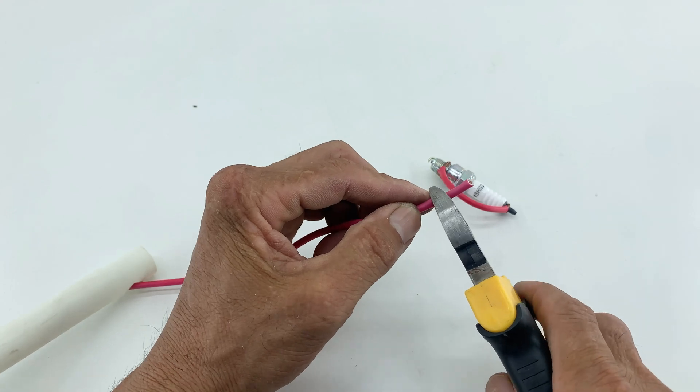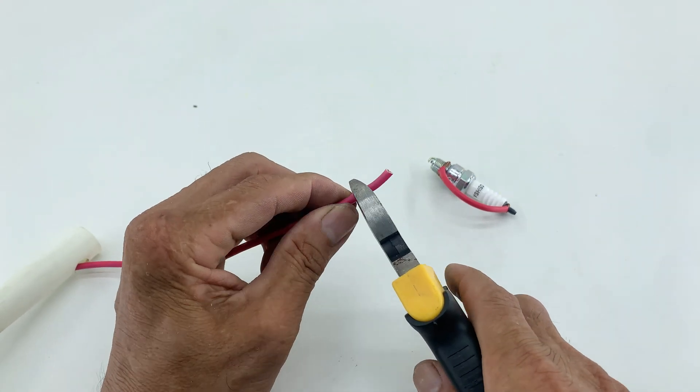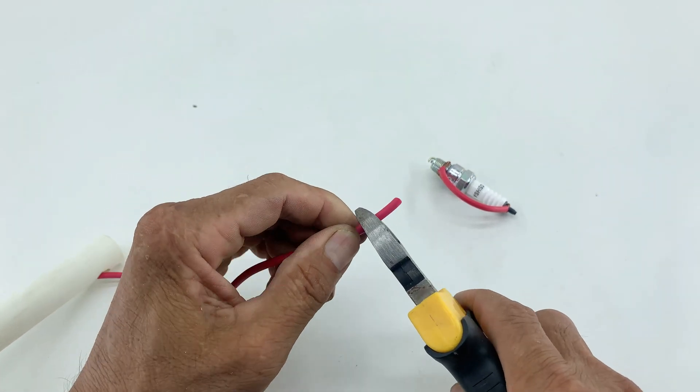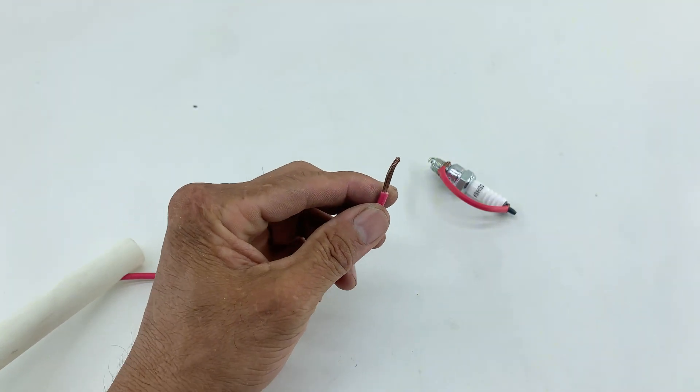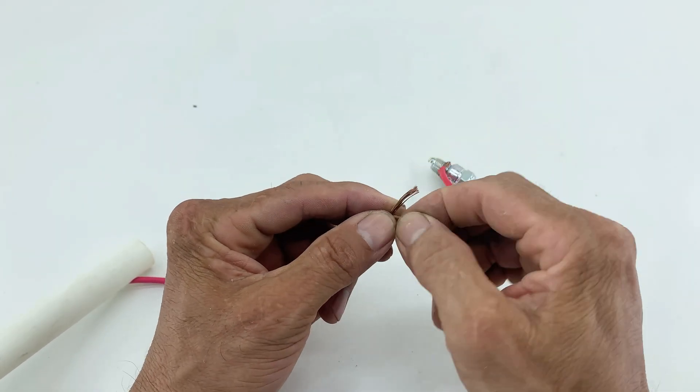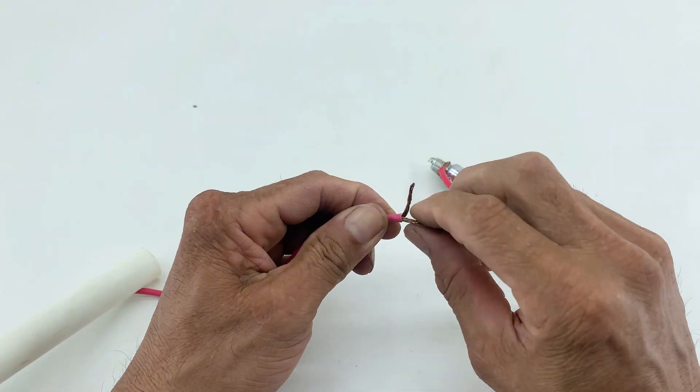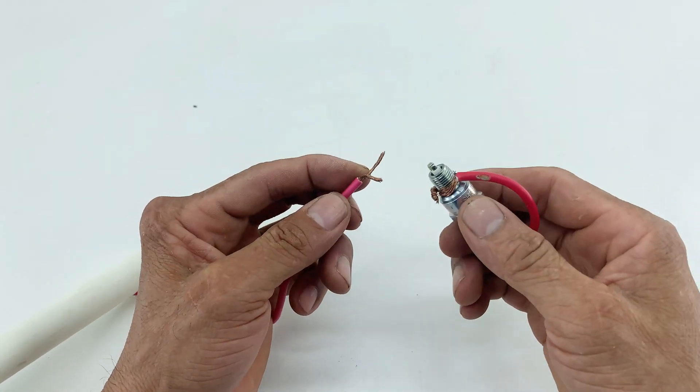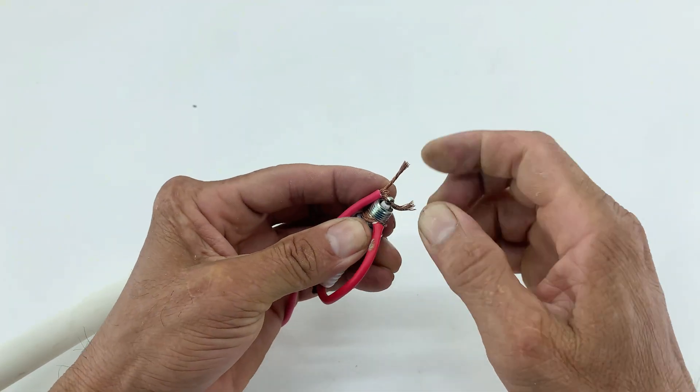Using pliers, I stripped the outer insulation, split the wire into two parts, and twisted them together. This wire will be connected to one terminal of the spark plug.